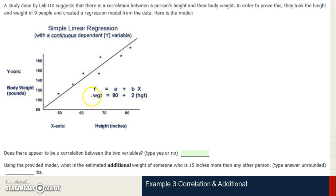You can see the graph here, and then you can see the model over here next to the graph. Does there appear to be a correlation between the two variables? Yes, there does. As one goes up, the other goes up. We have this nice straight regression line. So we'll just go ahead and type in yes.